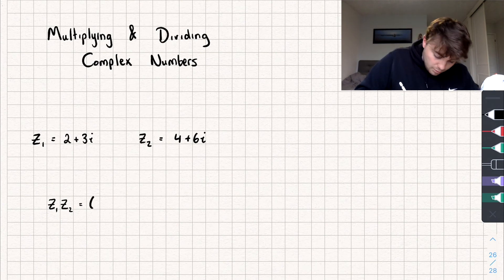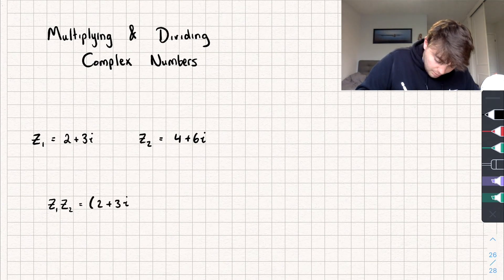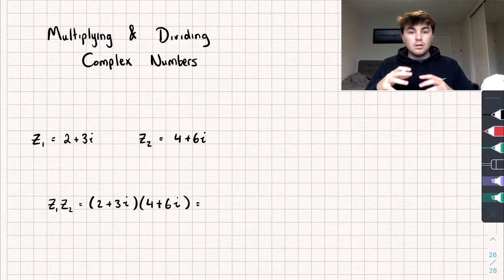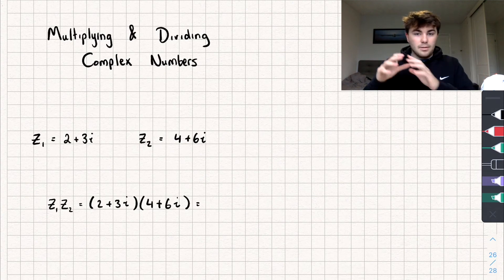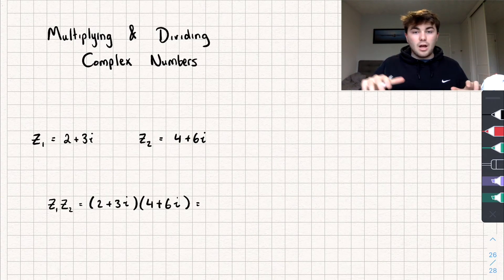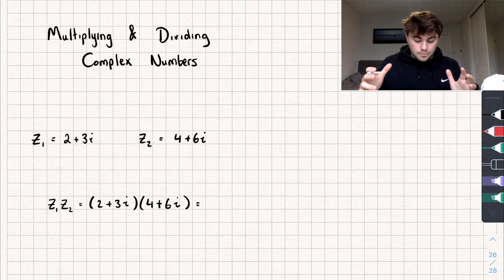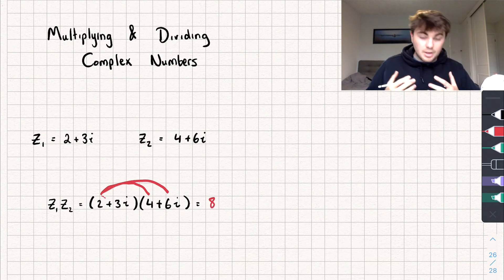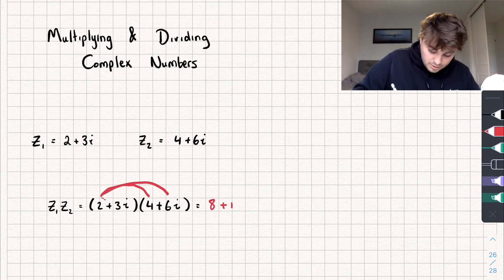So that's going to be equal to 2 plus 3i — that's z1 — multiplied by 4 plus 6i, which is z2. Now unlike when we add and subtract complex numbers, when we multiply we don't just multiply the real parts and then the imaginary parts; we have to multiply every term by every other term, almost like when we're expanding algebraic brackets. So we get 2 multiplied by 4, which gives us 8, and then 2 multiplied by 6i, which gives us plus 12i.